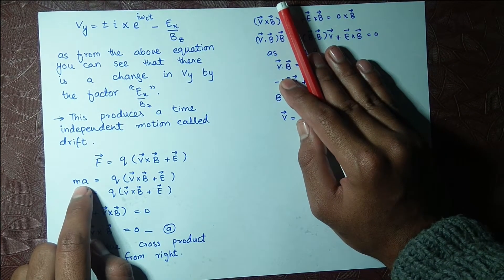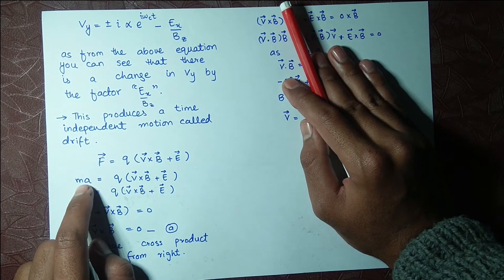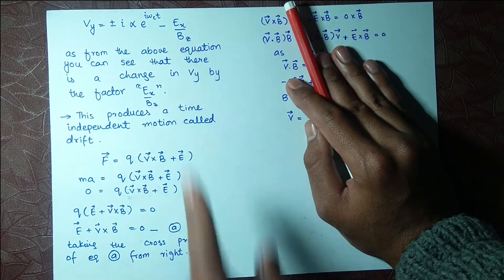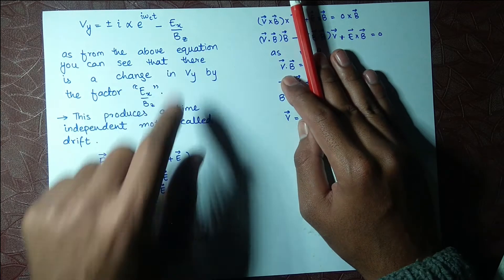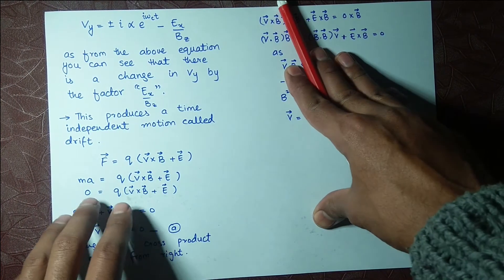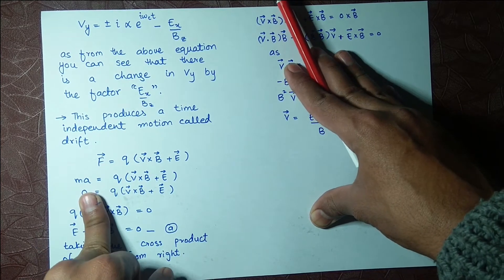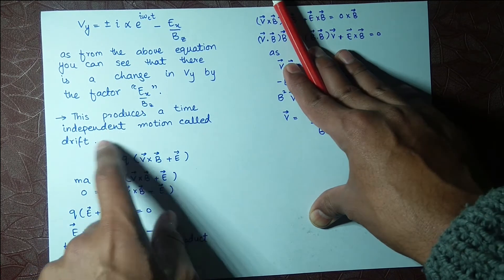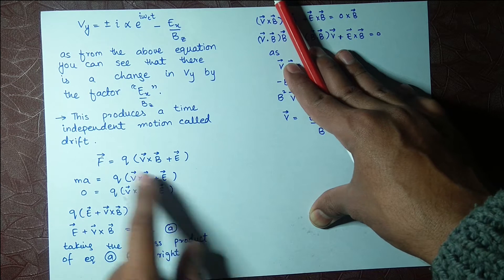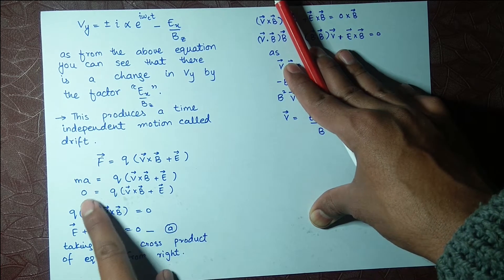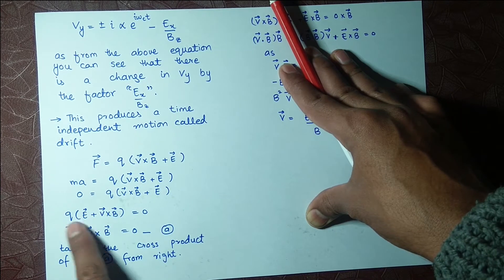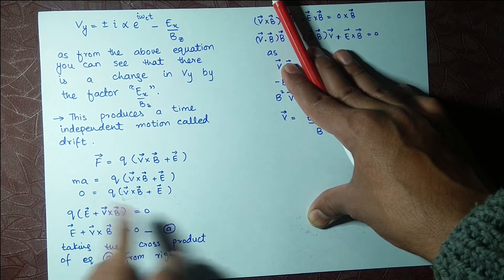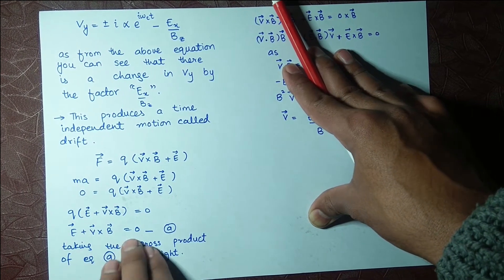Velocity is not changing with respect to time; it's changing with respect to space. So dv/dt will be zero because there is no time dependency — the derivative of v with respect to t, which is acceleration, will be zero. When acceleration is zero, m times a will be zero, so q(E + v×B) = 0. Dividing by q, we get E + v×B = 0.